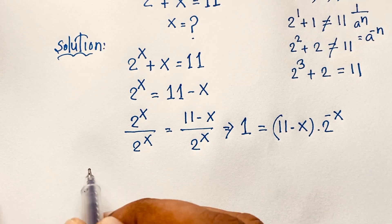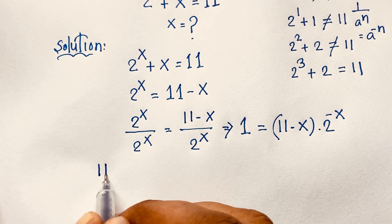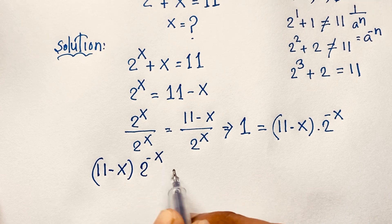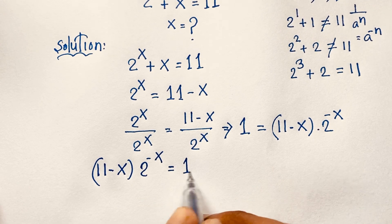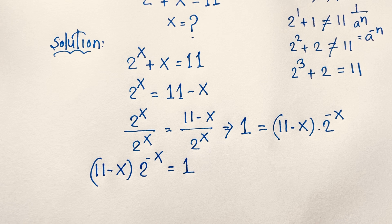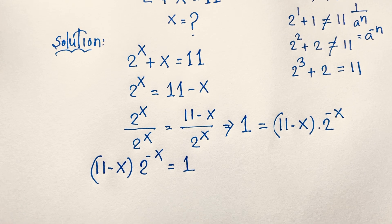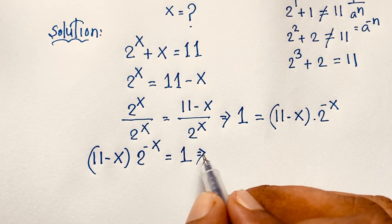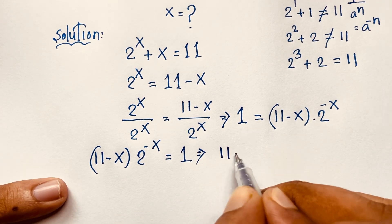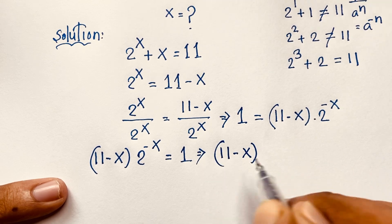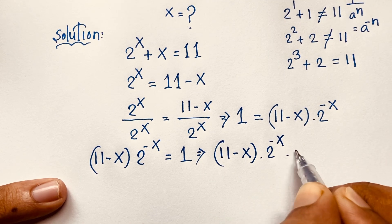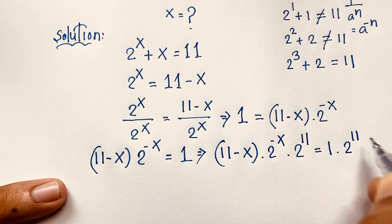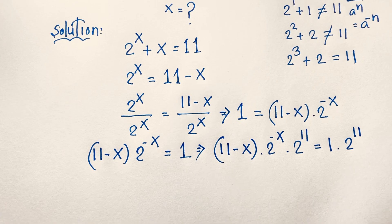Taking this equation again: (11 minus x) times 2 to the power of minus x is equal to 1. I want to use the Lambert W function here. So I multiply both sides by 2 to the power of 11, giving us (11 minus x) times 2^(−x) times 2^11 equals 1 times 2^11.